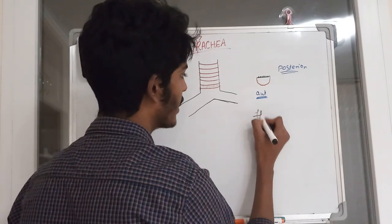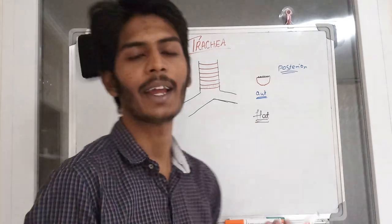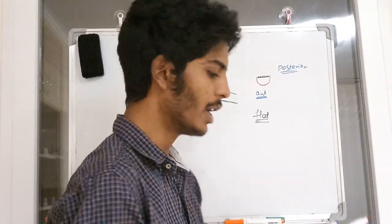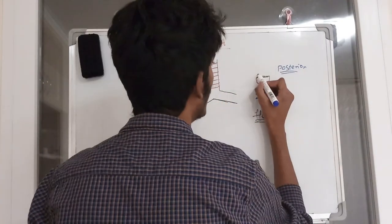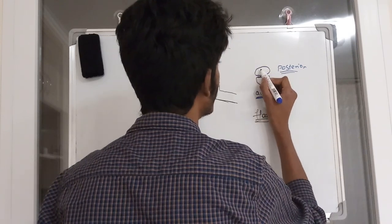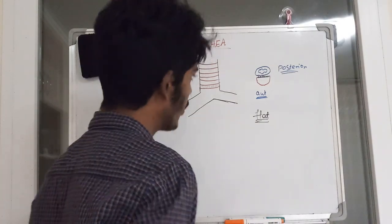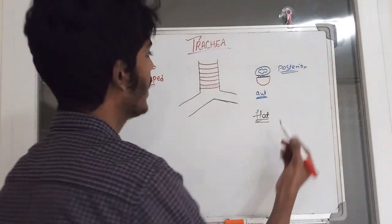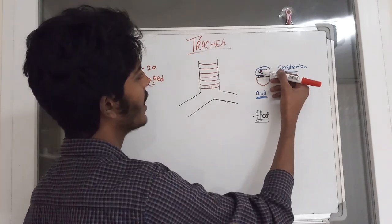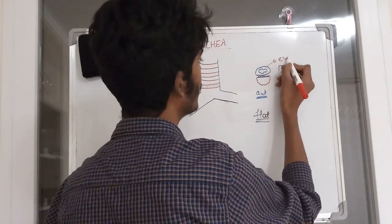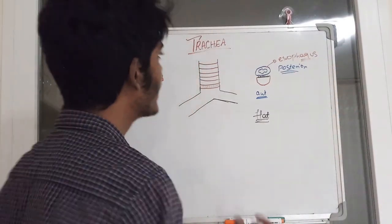The posterior surface of the trachea is flat. Behind the trachea lies the esophagus. So from anterior to posterior, we have the C-shaped cartilage ring anteriorly, then the trachealis muscle, and then the esophagus posteriorly.